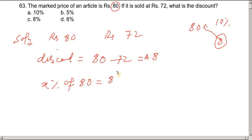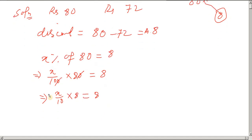Using the formula: discount percentage equals 8 divided by 80, multiplied by 100.